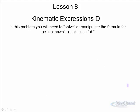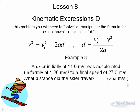And in the final example, we have a need to manipulate the formula for the unknown, in this case d. So, what we're given is enough information. We're probably given the final velocity, the initial velocity, and the acceleration. A skier initially at 11 meters per second, accelerated uniformly at 1.2, down a hill to a final speed of 27 meters per second. What distance did the skier travel?